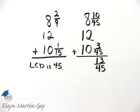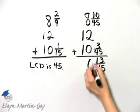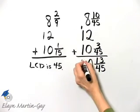And then let's add the whole number parts. 8 and 2 is 10, carry the 1, 1, 2, 3.